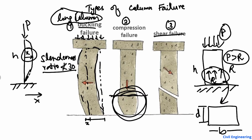The third failure is shear failure. This failure occurs because the shear capacity of the column at any point is lower than the shear demand. Because of the load acting on the column, shear stresses develop and some resistance is created inside the column. At one point, the shear resistance capacity becomes lower than the shear demand — you can see the shear resistance capacity V is low at this point.